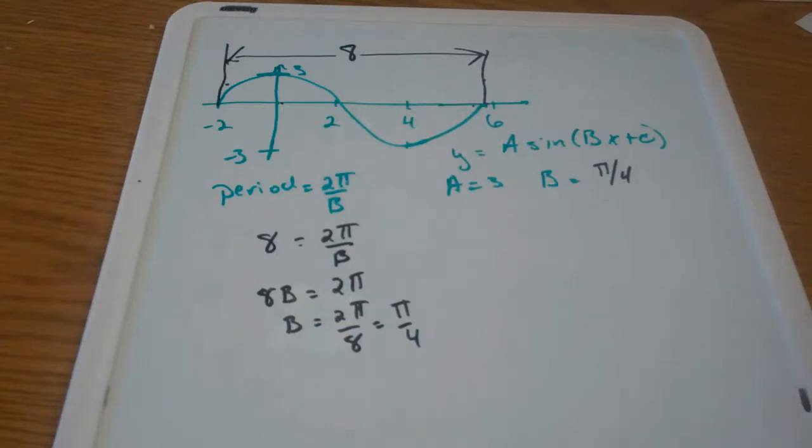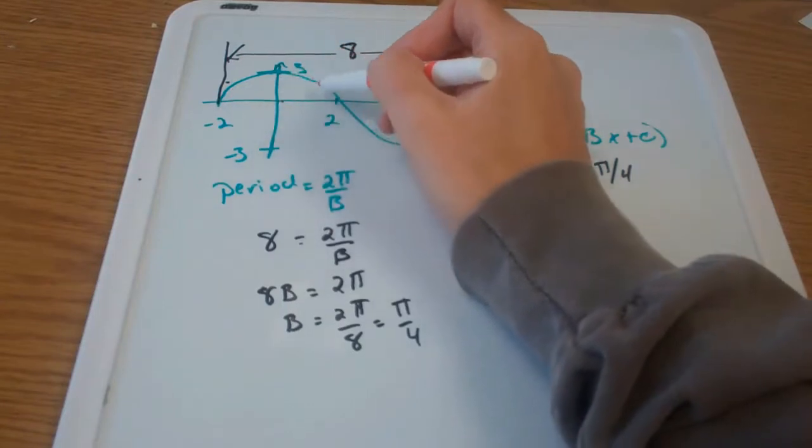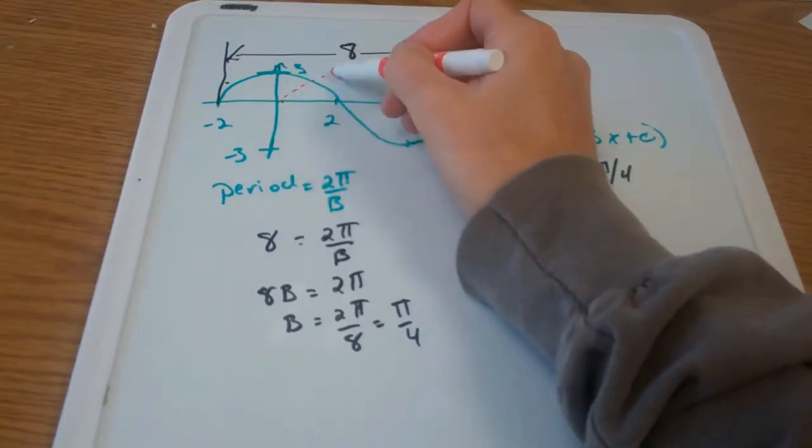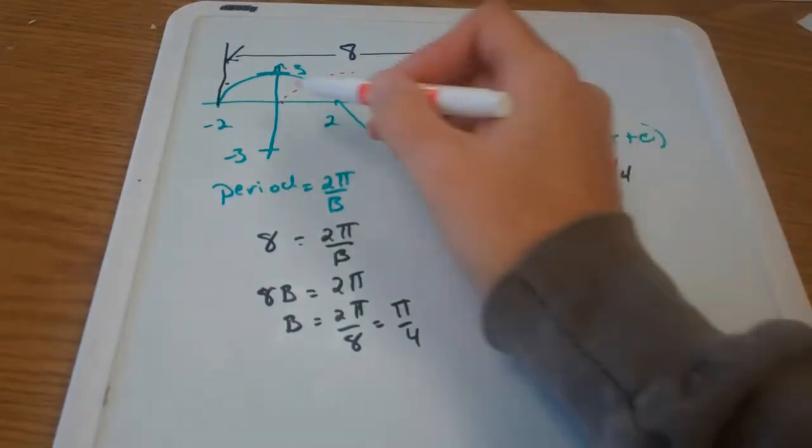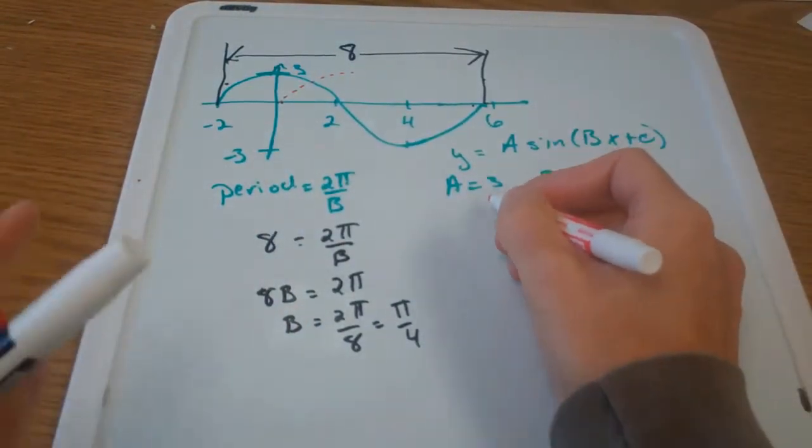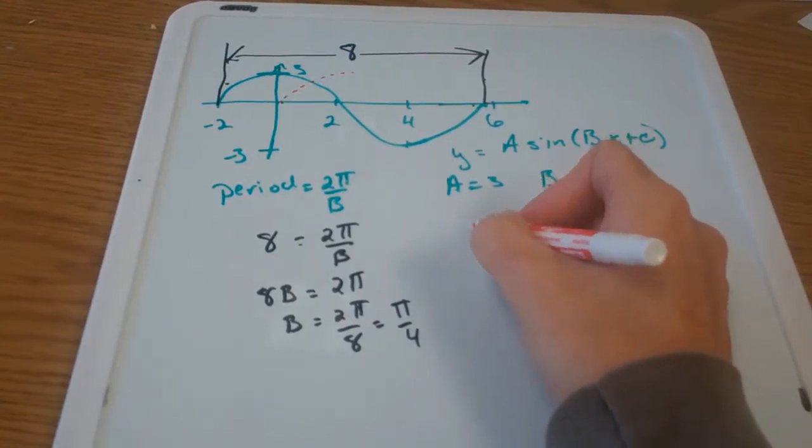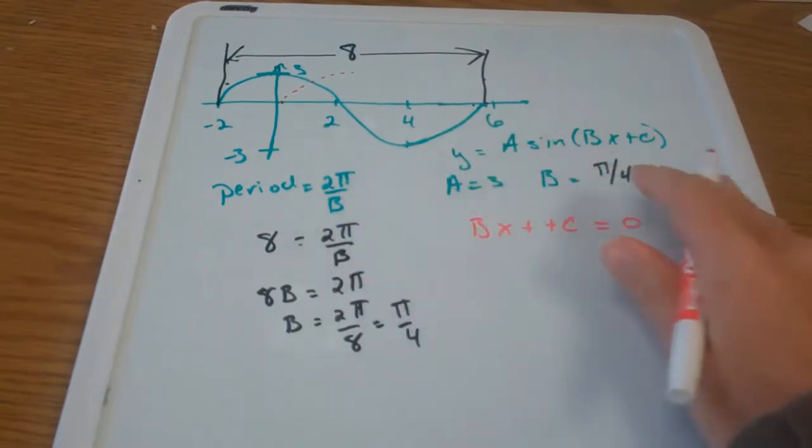What I'm going to do is take the inside part, bx plus c, and set that equal to 0. I always set it equal to 0 because I want to move this sine curve back to where I'm used to seeing it start, back to where it starts at 0. I want to transform it back over there to the y-axis. So I'm going to take this inside part and set it equal to 0 to get it back to 0.